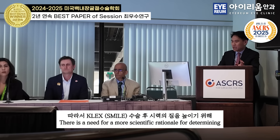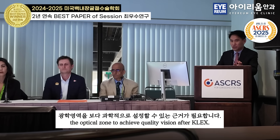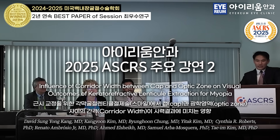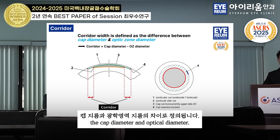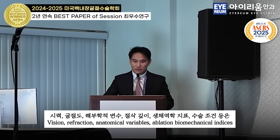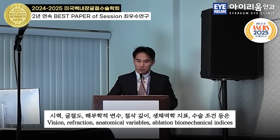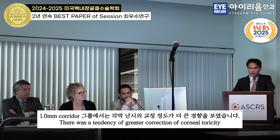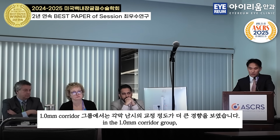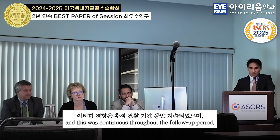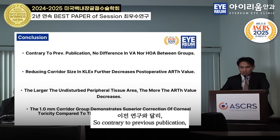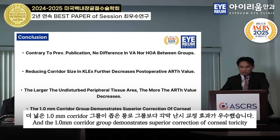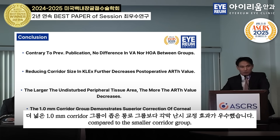There is a need for a more scientific rationale for determining optical zone for quality vision after CLEX. The title is 'Influence of Corridor Width Between Cap and Lenticule on Visual Outcomes of CLEX.' The corridor width is defined as the difference between the cap diameter and the lenticule diameter. Vision, refraction, anatomical variables, aberrometry, biomechanical indices, and operating sets were all controlled except for cap diameter. There was a tendency of greater correction of corneal touricity in the 1.0 mm corridor group, graphically displayed in a double angle plot. Contrary to previous publications, there are no differences in vision or high orders between the two groups, and the 1 mm corridor group demonstrates superior correction of corneal touricity compared to the smaller corridor group.